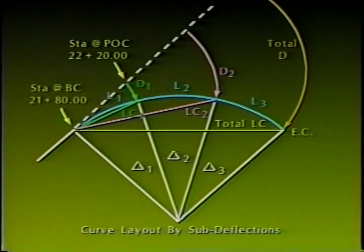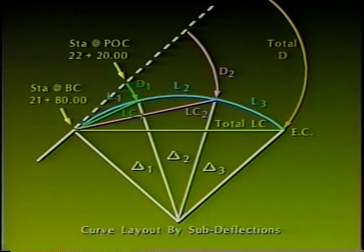The deflection angle between the back tangent and a line or sub-chord drawn from the BC to a point on the curve (POC) is the deflection angle for that particular POC or station. If a particular POC's deflection angle and sub-chord distance are known, layout from the BC is easily accomplished. For our example curve, the radius is 550 feet and the central angle is 28 degrees, 35 minutes, 0 seconds. The total deflection angle for the complete curve is half-delta, or 14 degrees, 17 minutes, 30 seconds.